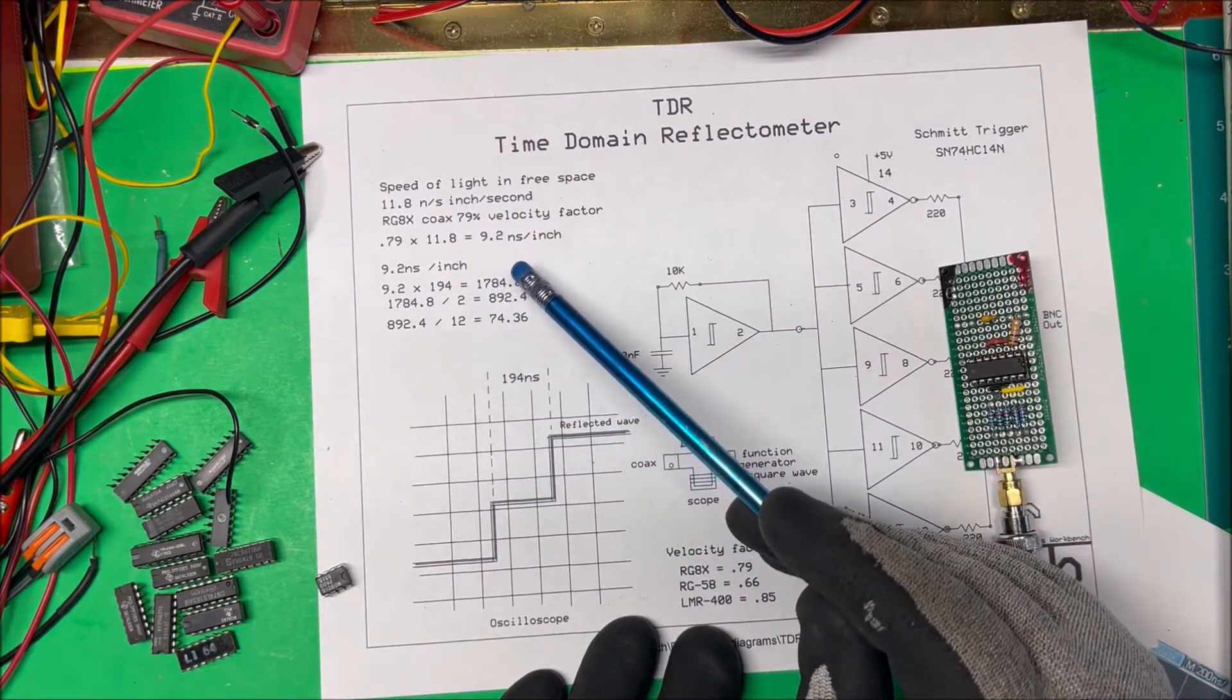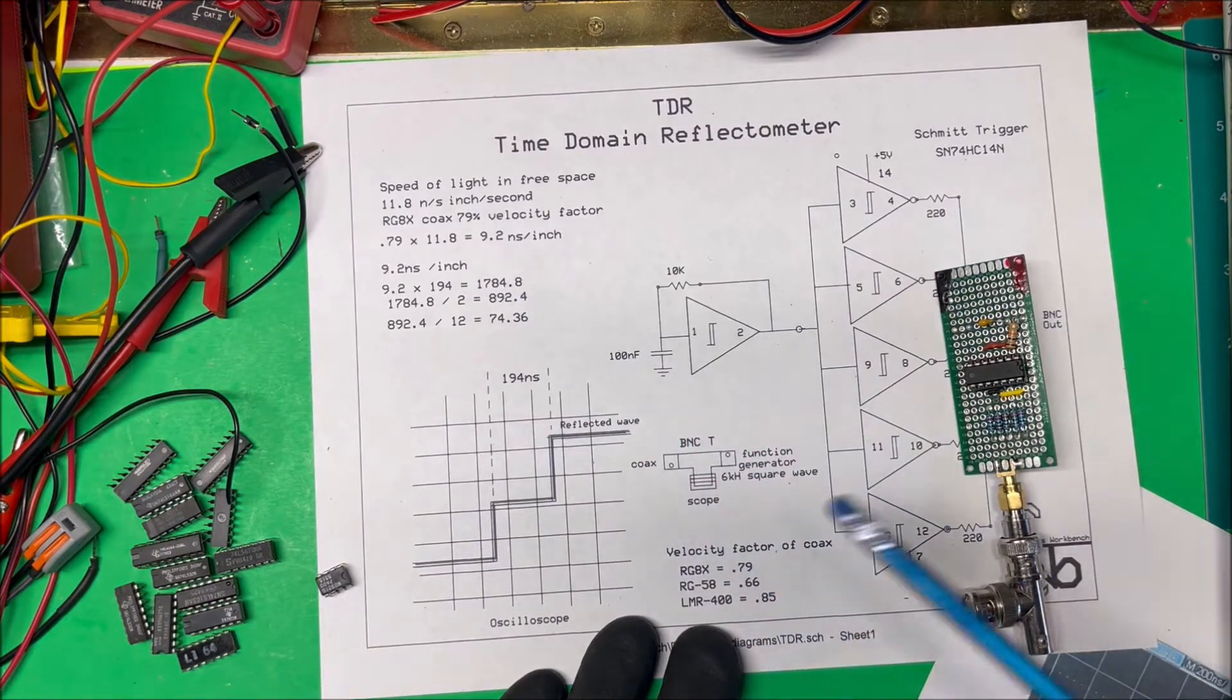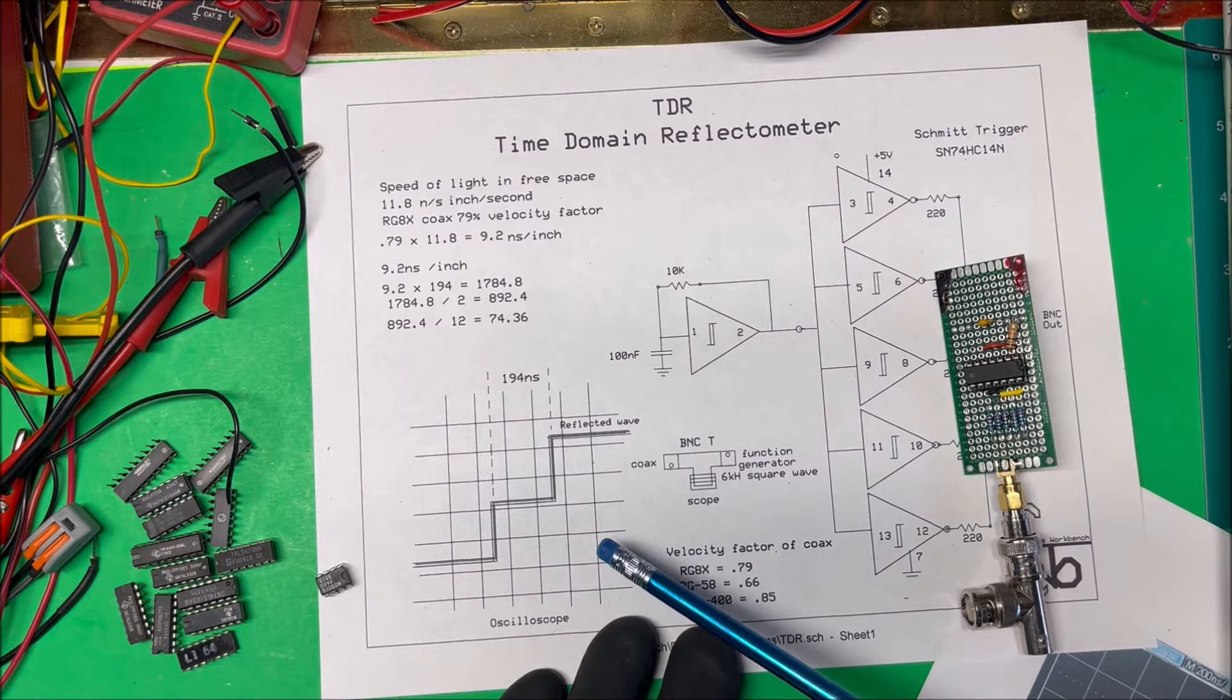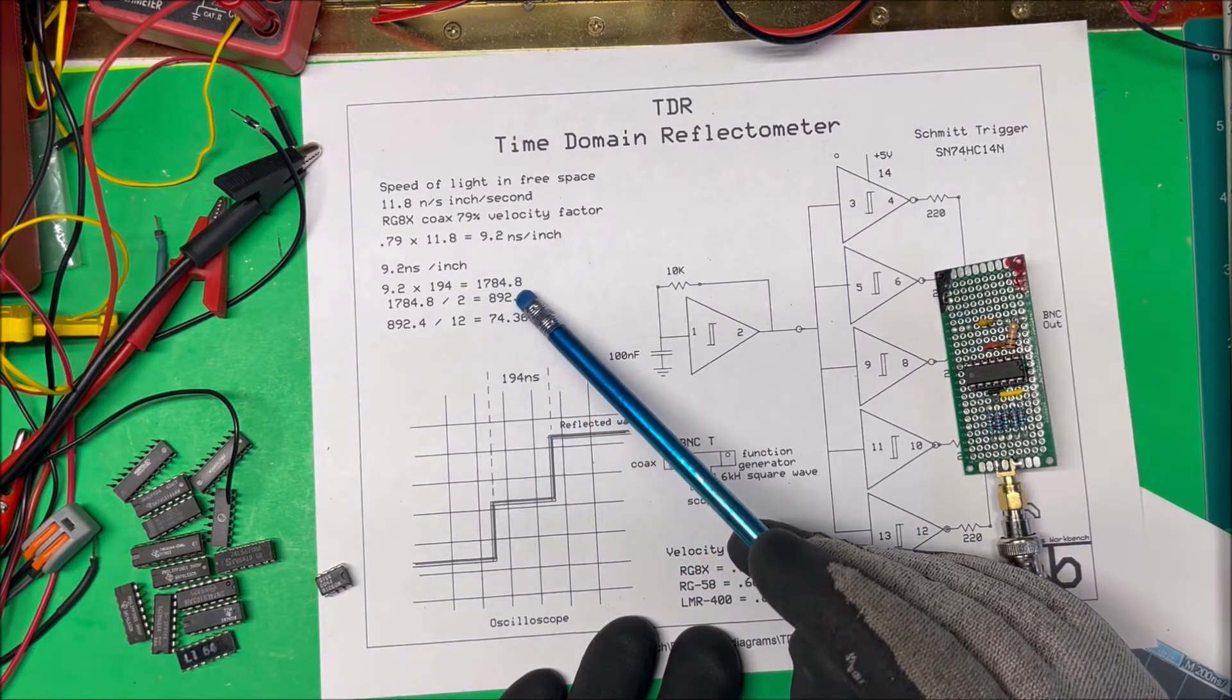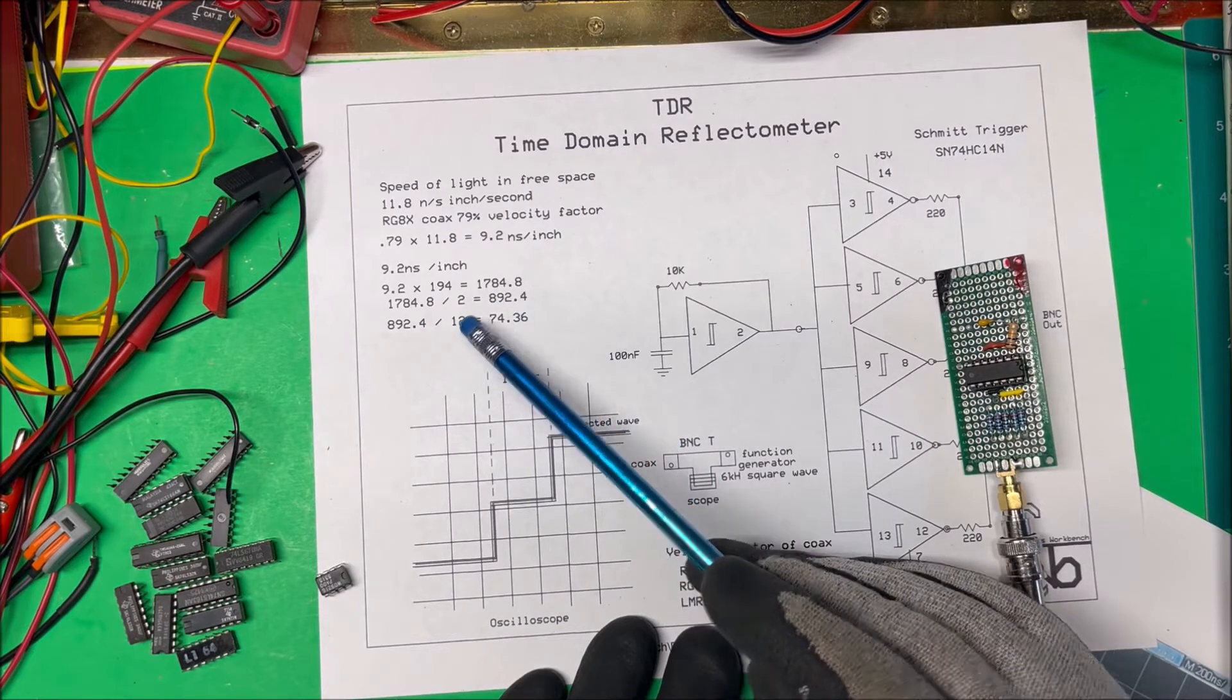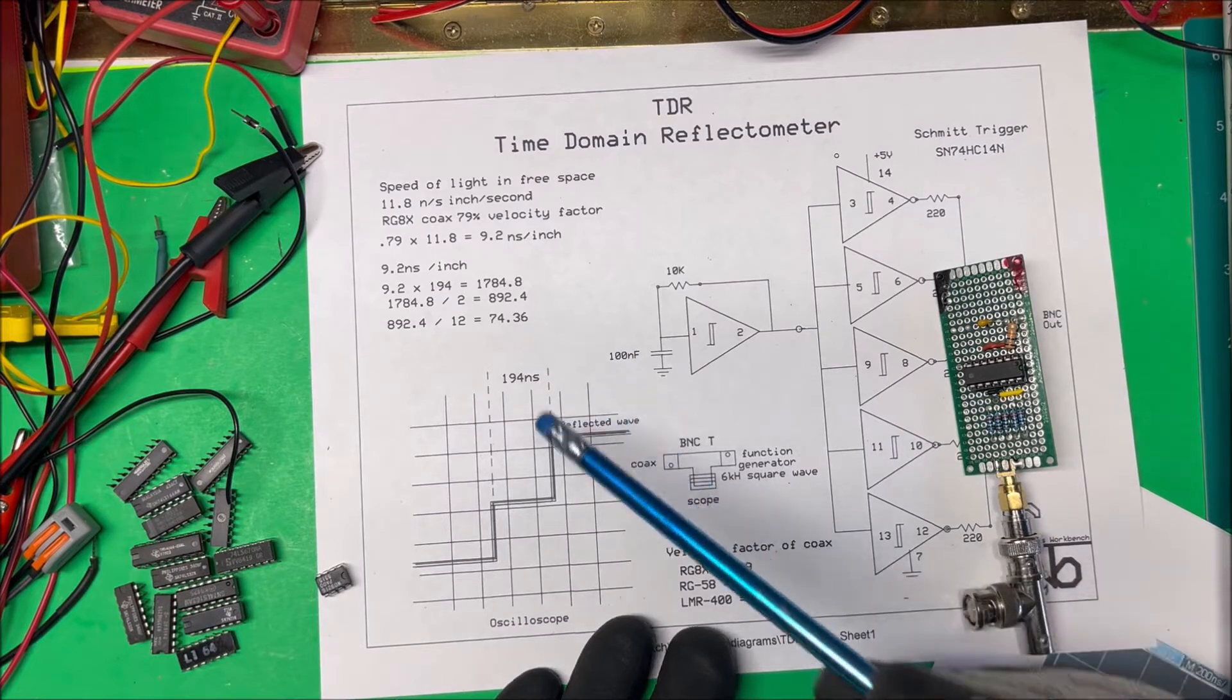You know that comes out to 1784 and that's the round trip going both ways, so we divide that by two and we get 892 inches. And then if we divide that by 12 to get feet, it comes out to 74 feet, 74.36 feet.